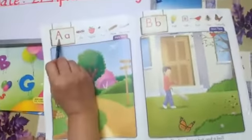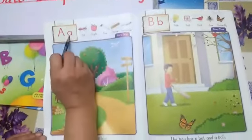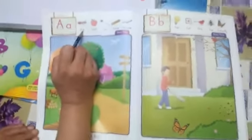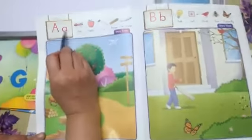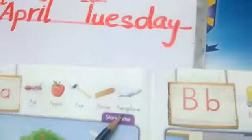Letter A says A. Ant. A says A, Ant. Apple. Axe. Arrow. Airplane.